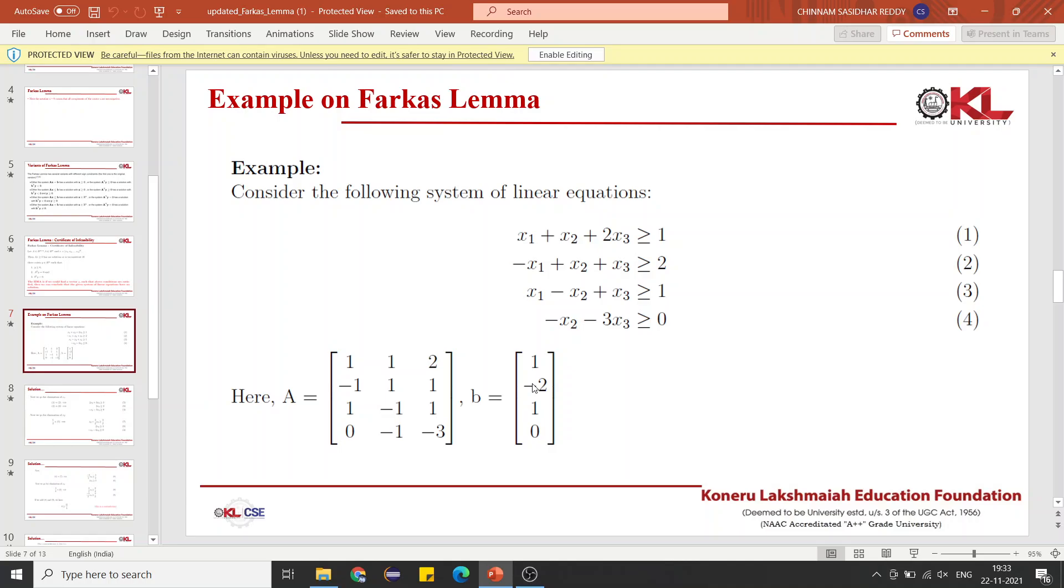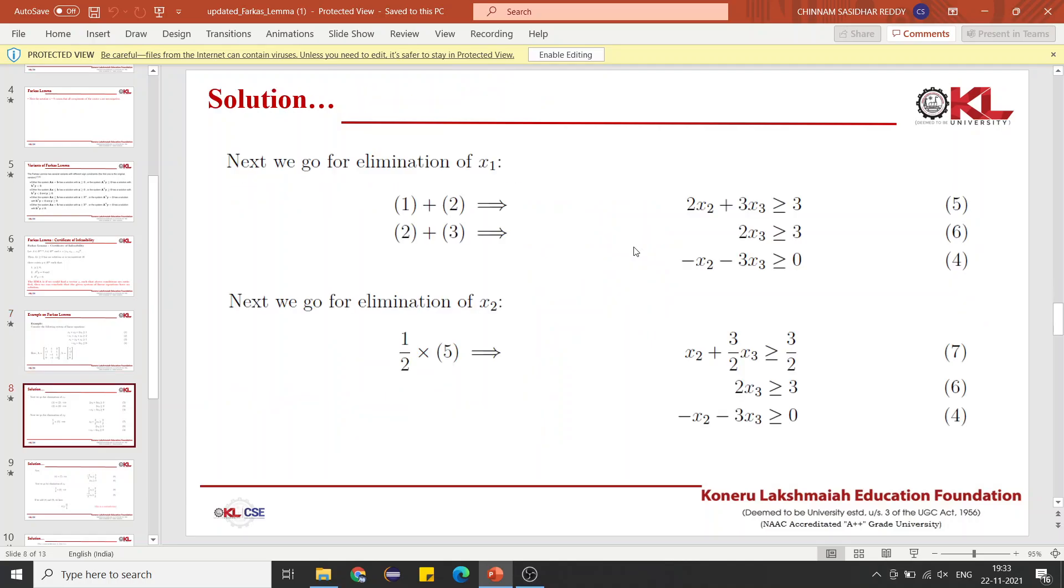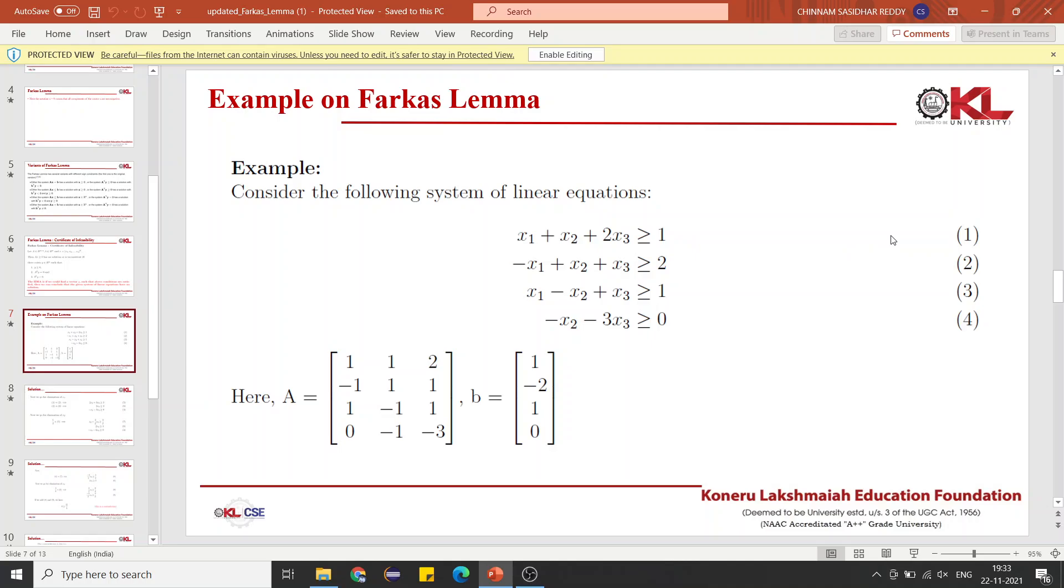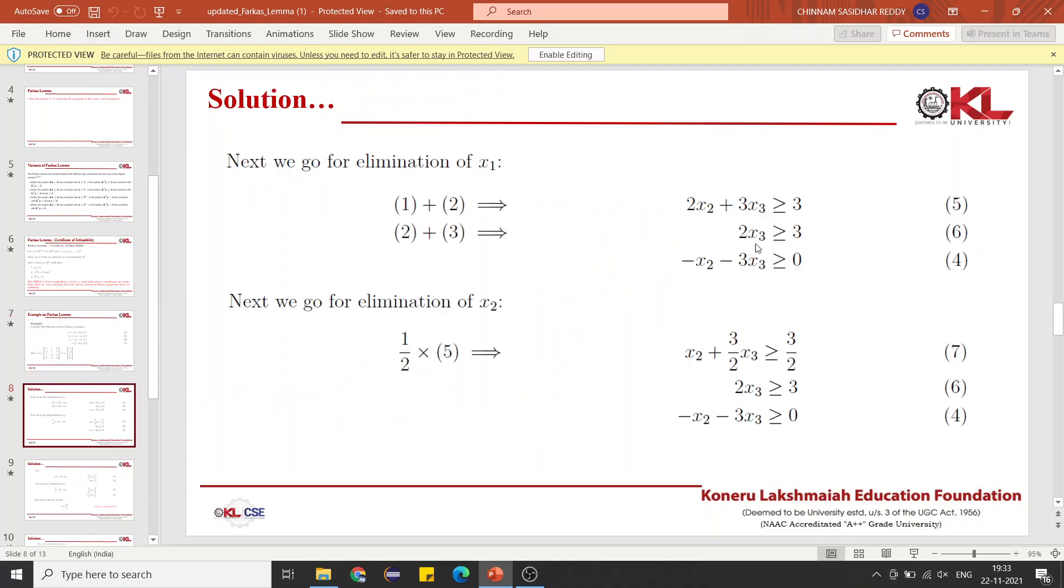The next step is we have to eliminate all of these x1, x2, and x3 from these equations. How do we eliminate? First, to eliminate x1, we will add equations 1 and 2. This x1 will be cancelled and you will get 2x2 plus 3x3 greater than or equal to 3.